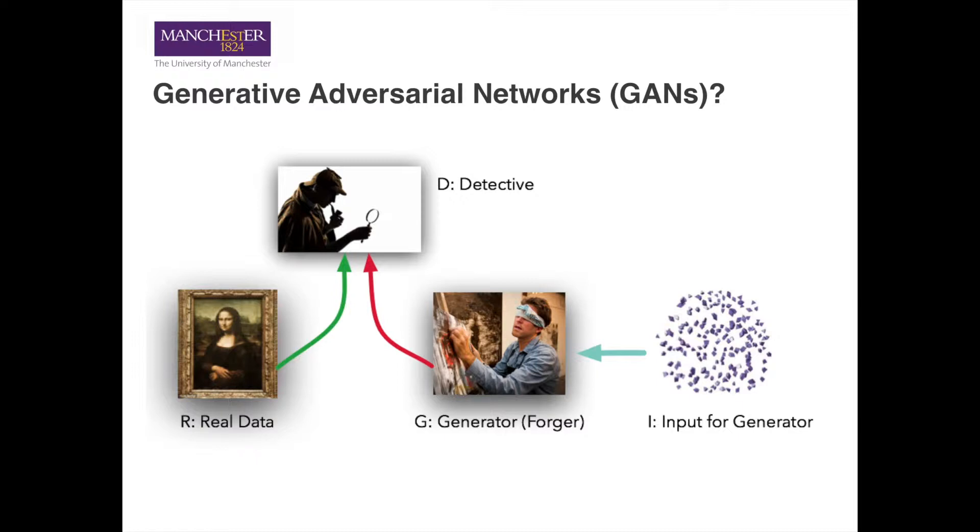The generator can be thought of as a forger who tries to forge paintings, and the discriminator is like a detective that needs to identify the counterfeit and the authentic work. During the training process, the generator continuously improves its ability to generate data that are indistinguishable from the authentic ones.